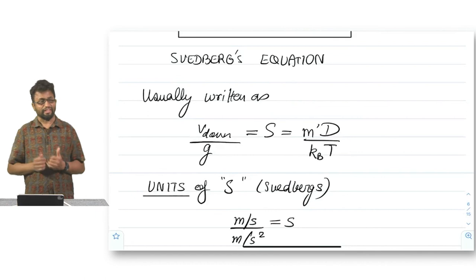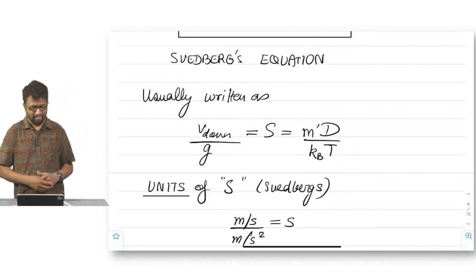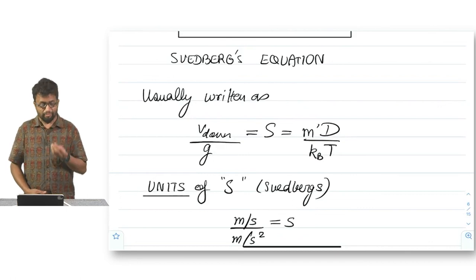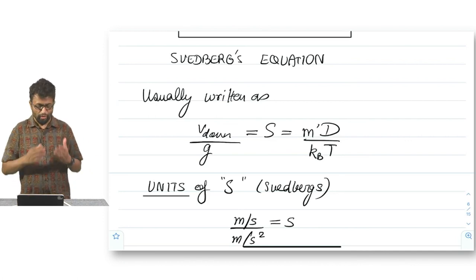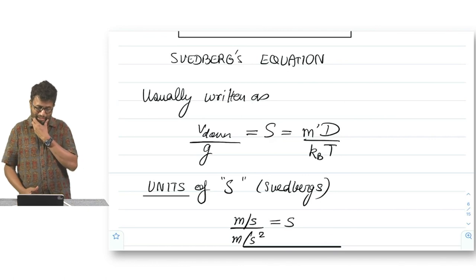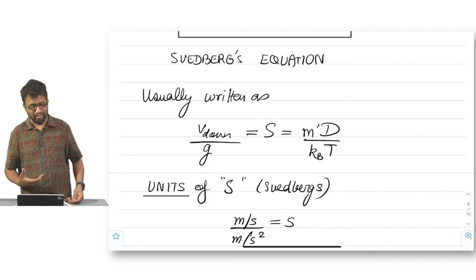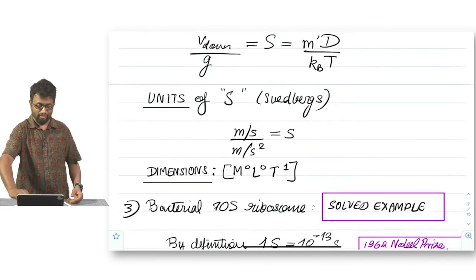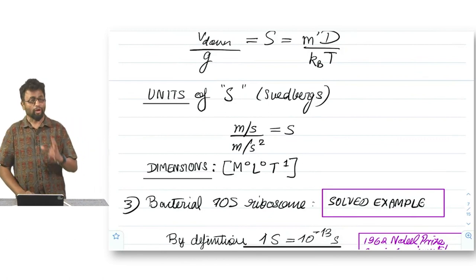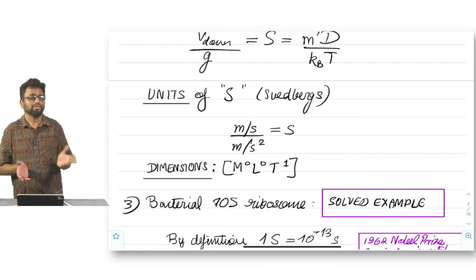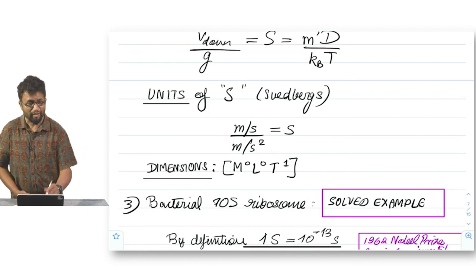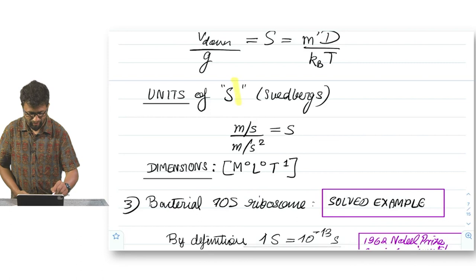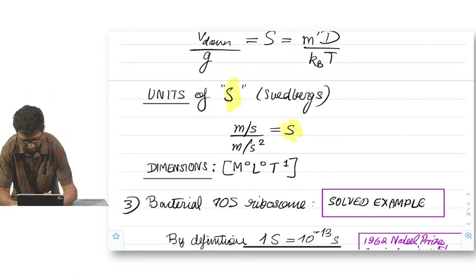This is Svedberg's equation. It is usually written as the ratio V down by G, that is to say relative to the acceleration, and that is replaced by a symbol S, which is the Svedberg unit that is so famous. Svedberg unit has the units meters per second divided by meters per second square - meter cancels out, and you end up with seconds. The dimensions are time to the power 1, M naught, L naught, and the units are time units, which in SI units we use as seconds represented by the symbol S. Just not to confuse, this S is capital, representing Svedberg units, and this S is small, in other words seconds.